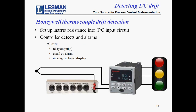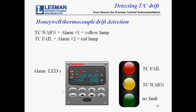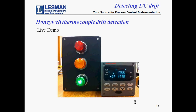This is a diagram of the simulated drift detection with a UDC controller. A decade resistance box is used to simulate a polluted high-resistance thermocouple junction in order to demonstrate the drift alarm. The alarm outputs are wired to an alarm enunciator that looks like a traffic light. On the UDC faceplate, the temperature is shown in the upper display, the setpoint is shown on the lower display, and the LED indicators in the upper left indicate the alarm status. Alarm number one is TC WARN and alarm number two is TC FAIL. The green lamp, when it turns on, indicates no fault.